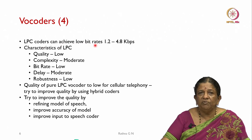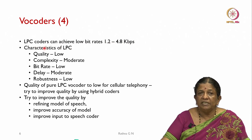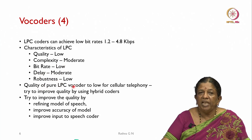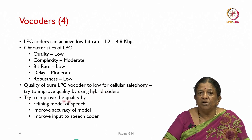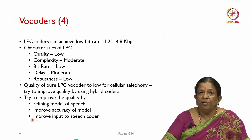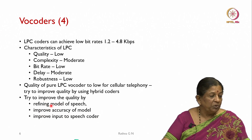LPC can achieve low bit rates from 1.2 to 4.8 kilobits per second. The characteristics of LPC coding are: quality is very low, complexity is moderate, bit rate is low, delay is moderate, and robustness is also low. The quality of a pure LPC coder is too low for cellular telephony, so we try to improve quality by using hybrid coders.